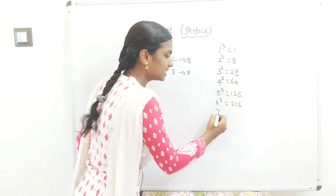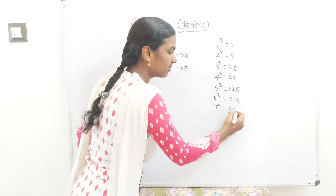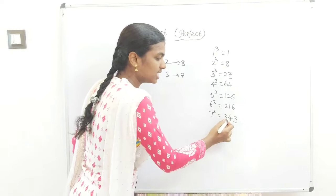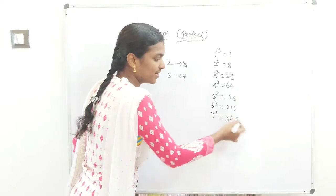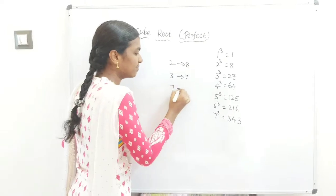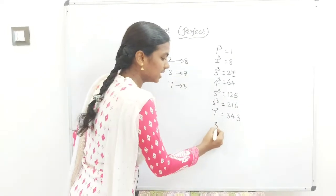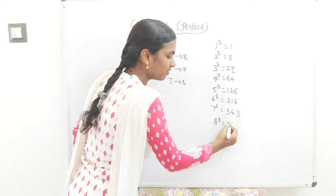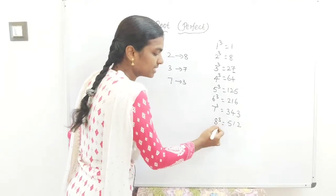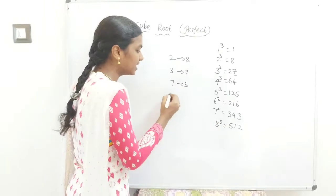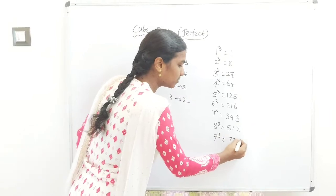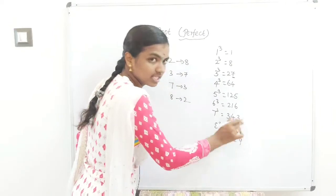7³=343. After 1, after 2 comes 3, 4, so 7 means ending with unit digit 3. 8³=512, so if it's 8, the last digit will be 2. 9³=729, so 9 means the last digit is also 9.